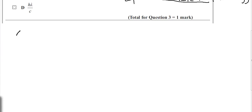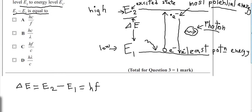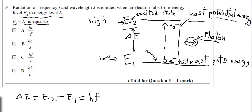Now by calculation: we have known that the energy difference is denoted by ΔE, which is E2 minus E1, and this is also the energy of the photon that is emitted. This is the energy change, or energy difference, that is equivalent to the photon emitted here.